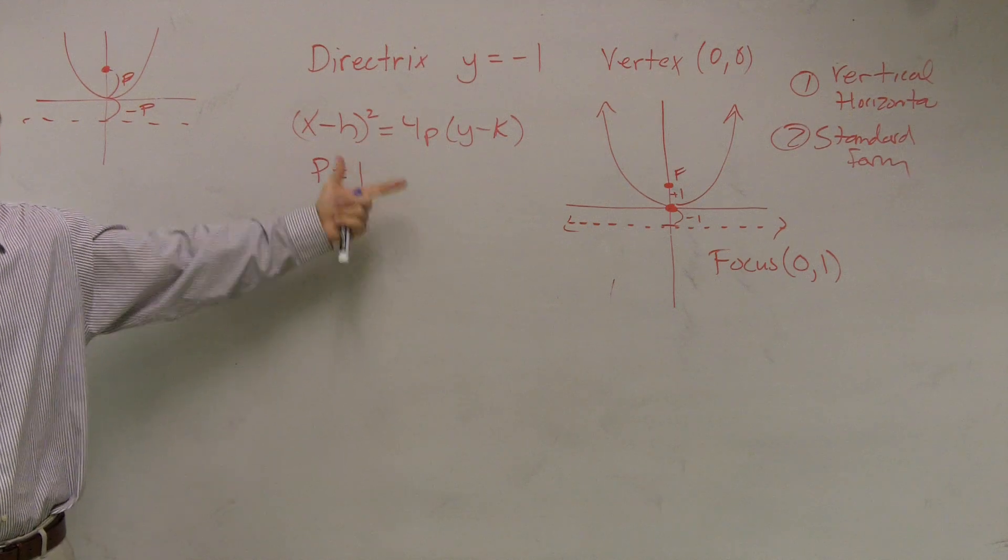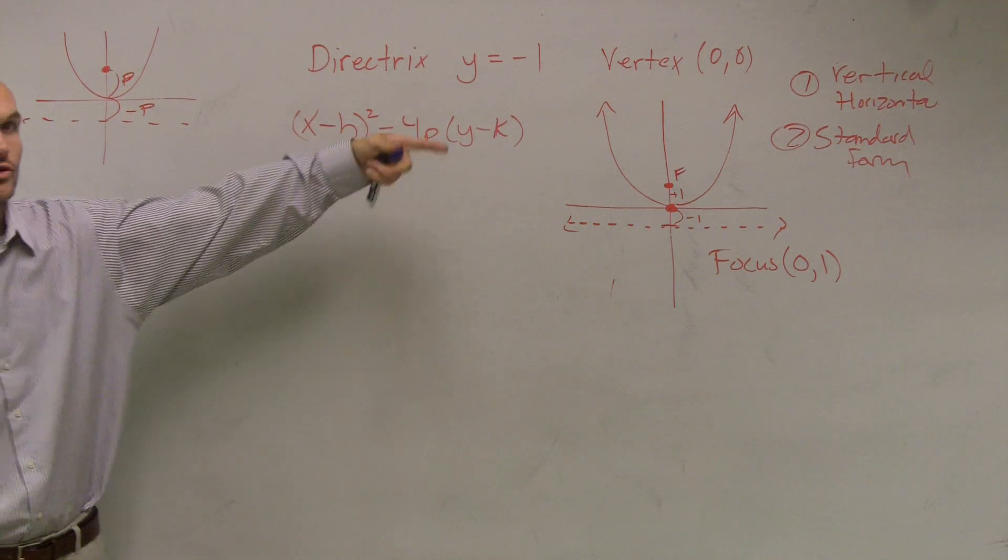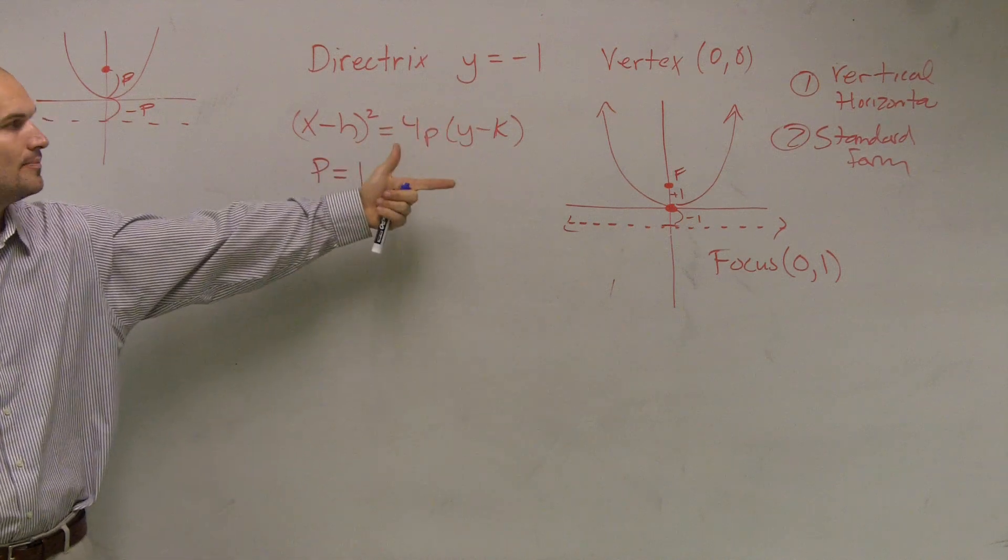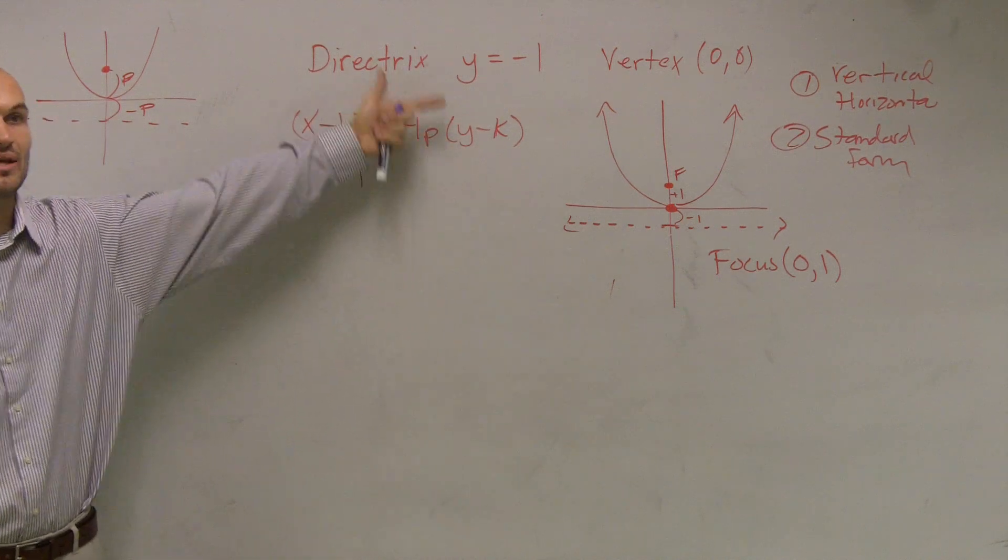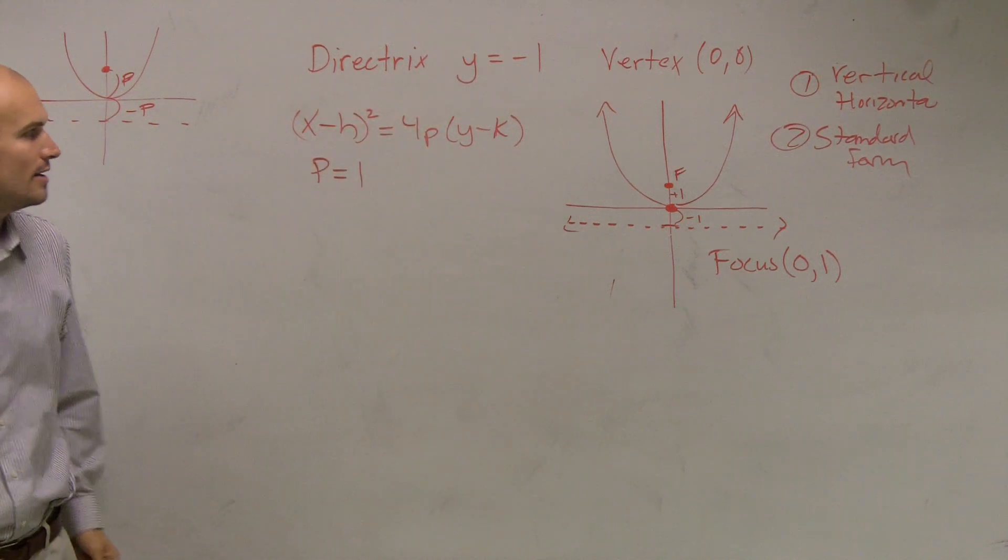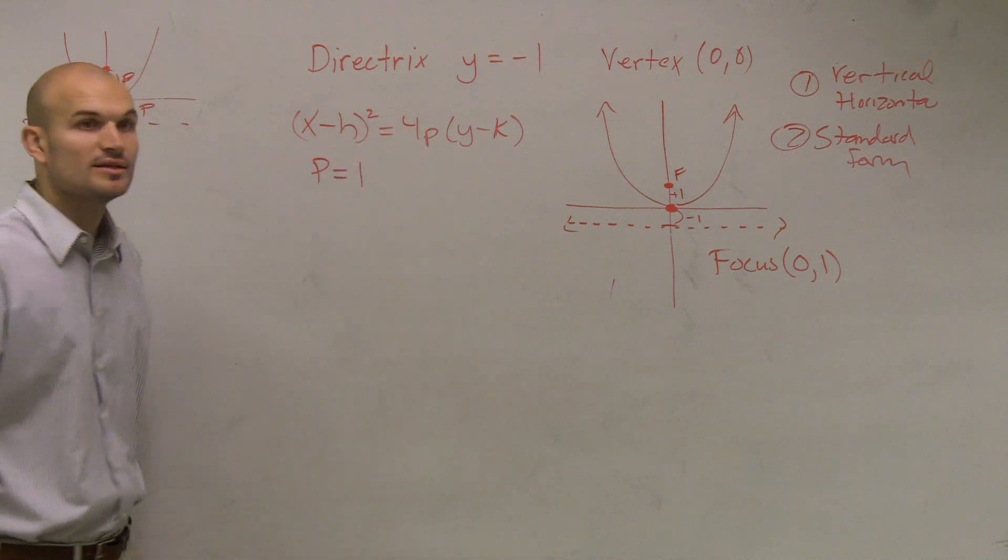Because p told us, remember, for your vertex, for your focus, you do your vertex, or your k plus p. So p is equal to 1. So now, ladies and gentlemen, let's just plug in the information that we have.